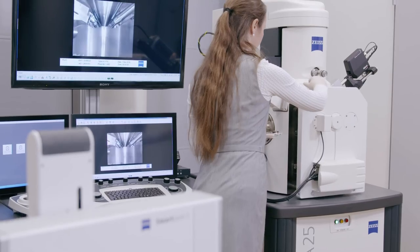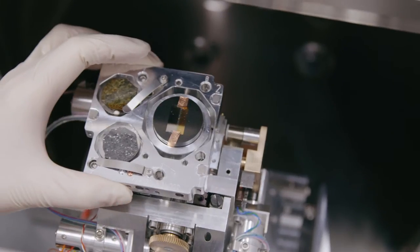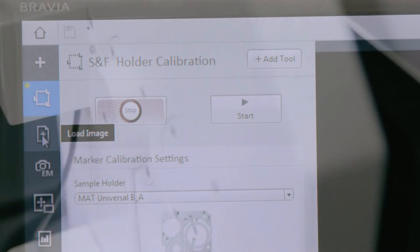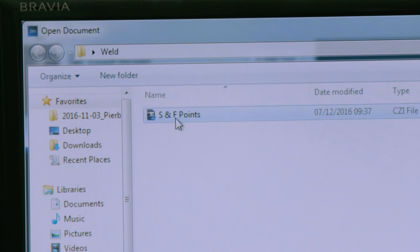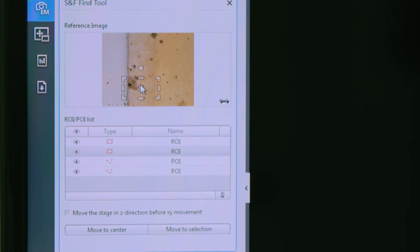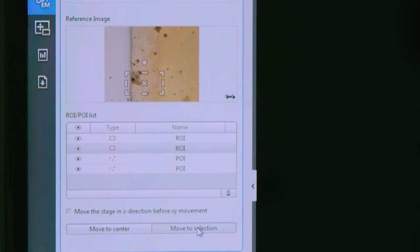Once you have shuttled your sample to the SEM, you can skip the time-consuming search for your regions of interest. Simply load the sample and perform a calibration that is done almost automatically. Then click on a previously marked position and the SEM finds the corresponding location within seconds.